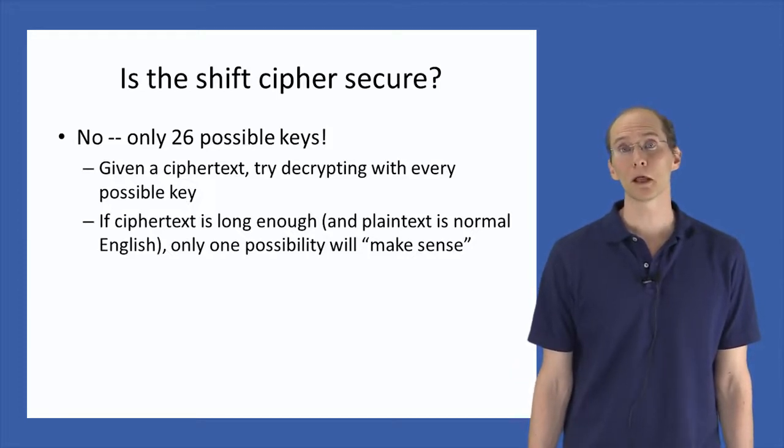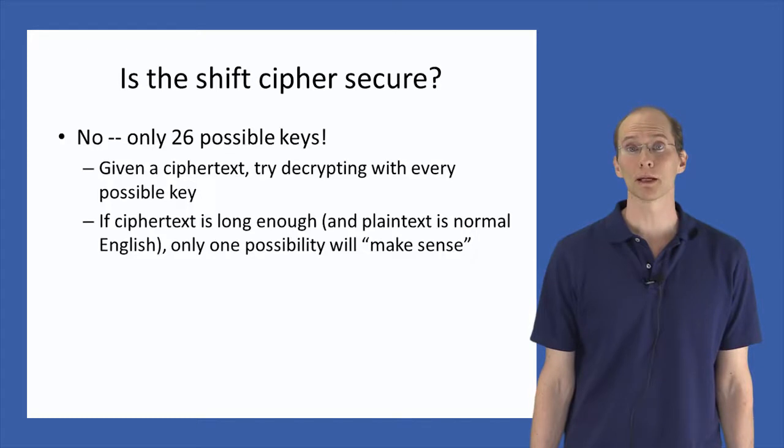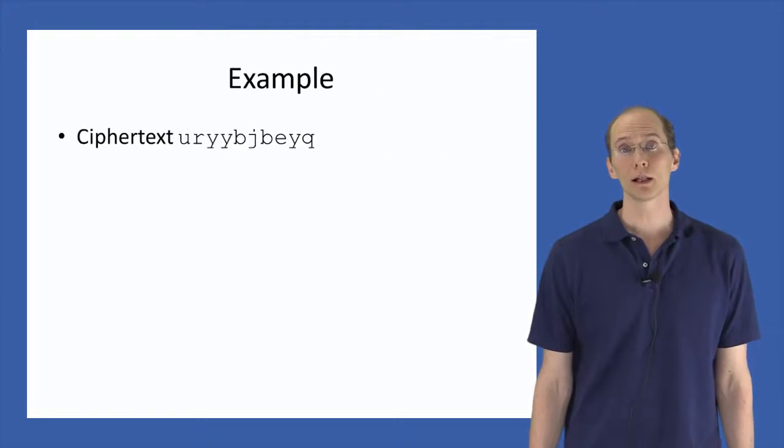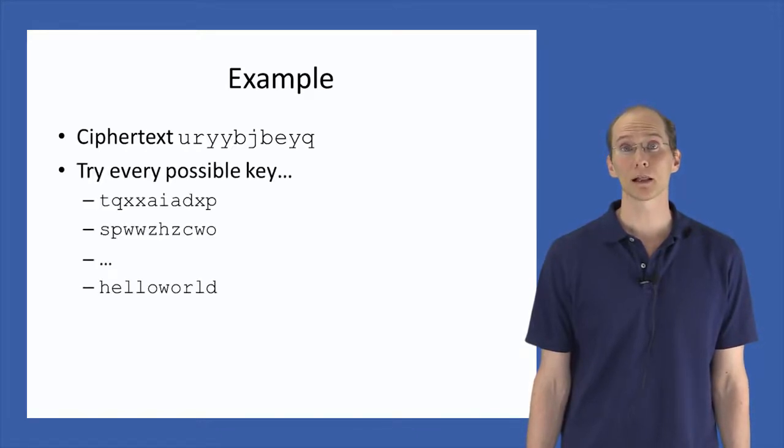For example, imagine you've intercepted the ciphertext displayed here. If you try decrypting using every possible value of the key, you'll get a list containing 25 strings of gibberish plus one that says hello world. That tells you exactly what message was encrypted to give the ciphertext.